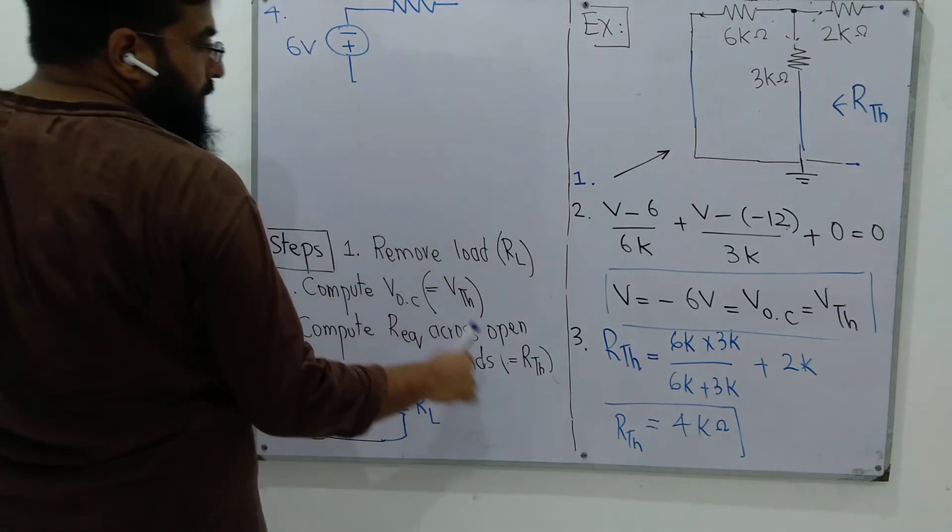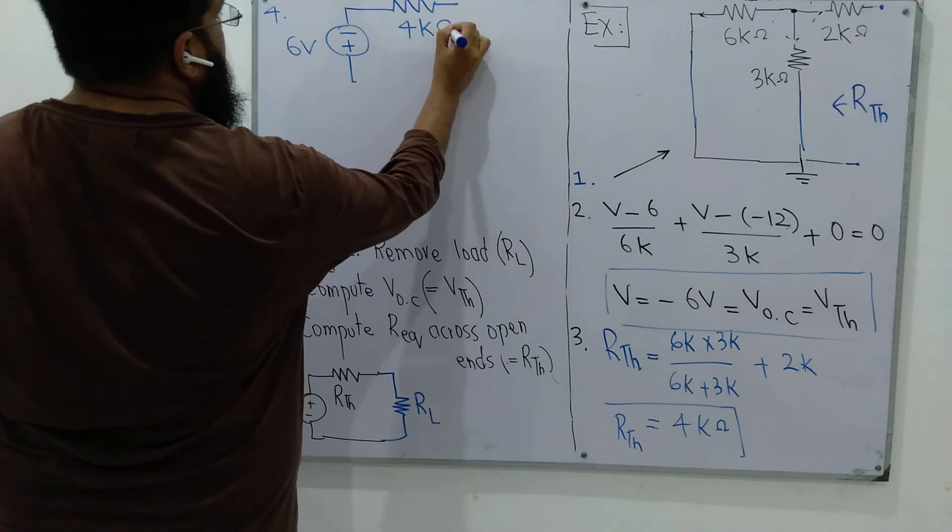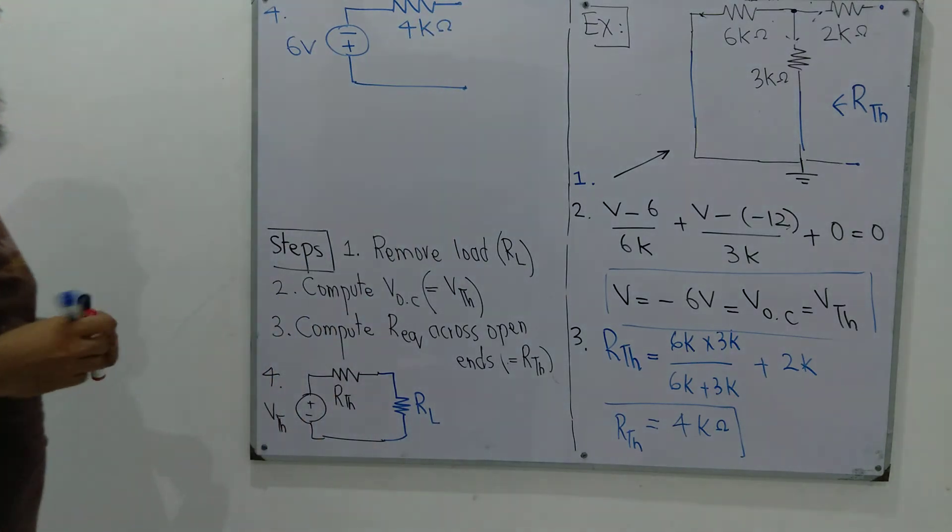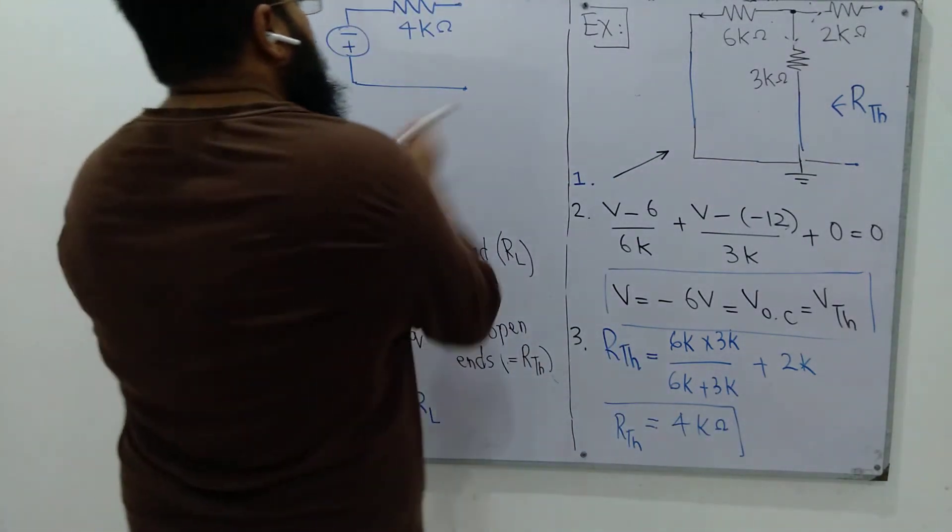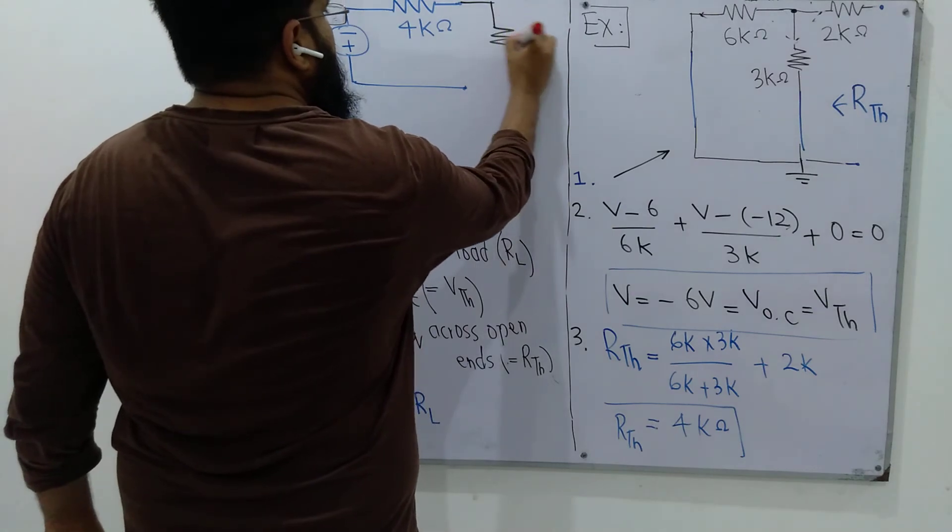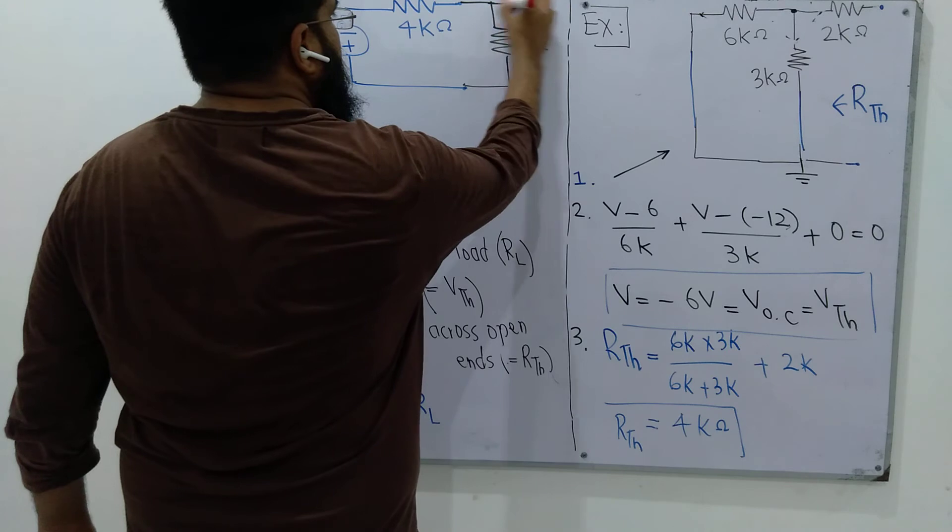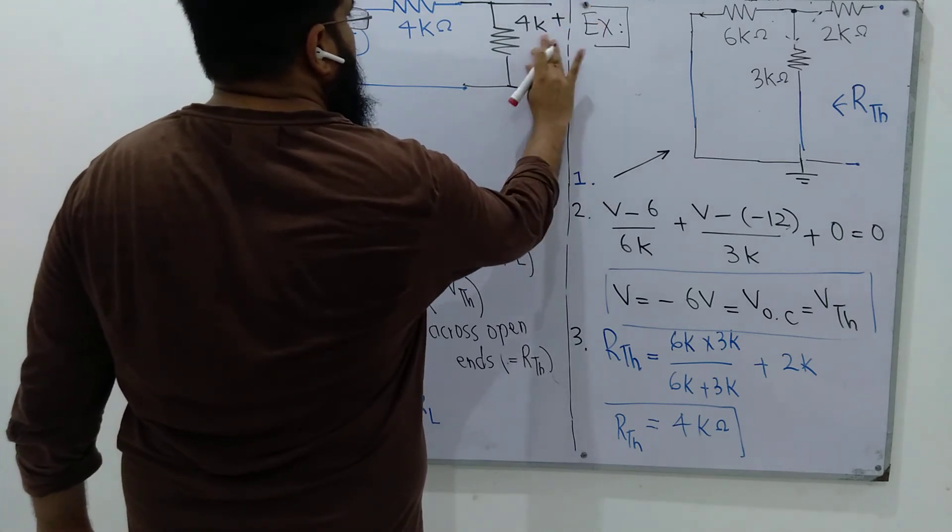This Rthevenin is 4k ohms and then finally we have to put the load that was removed from the original circuit, and that was the resistor with value of 4k ohms. We are asked to find out the voltage drop across it.